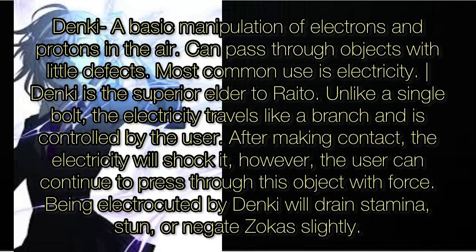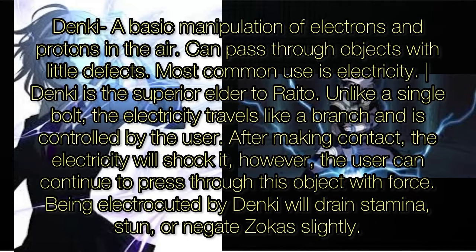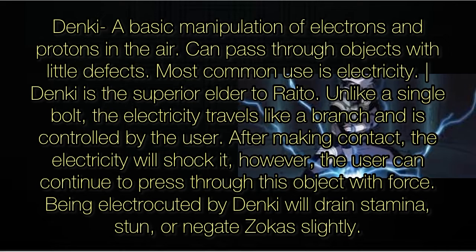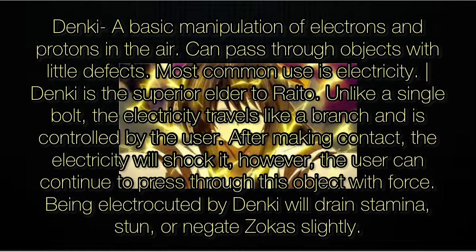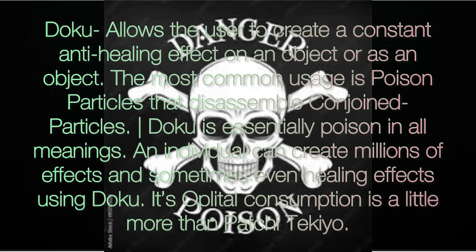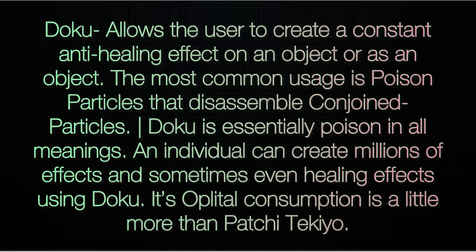Denkai is a basic manipulation of electrons and protons in the air and can pass through objects with little defects; its most common use is electricity. Denkai is a superior elder to ratio — unlike a single bolt, the electricity travels like a branch and is controlled by the user. After making contact, the electricity will shock; however, the user can continue to press through the object with force. Being electrocuted by denkai will drain stamina, stun, or negate zokas slightly.